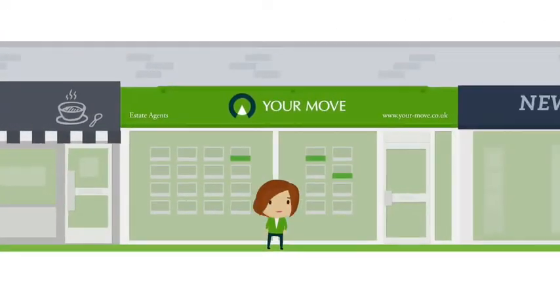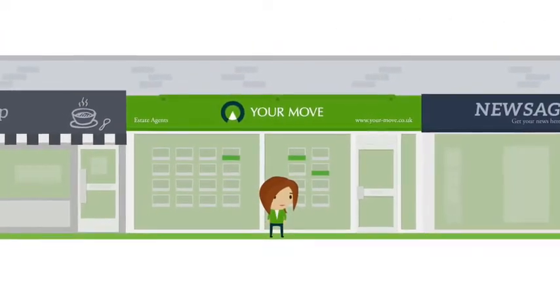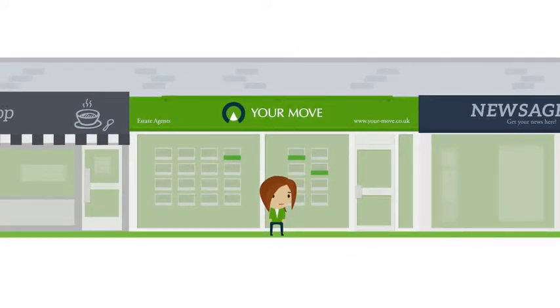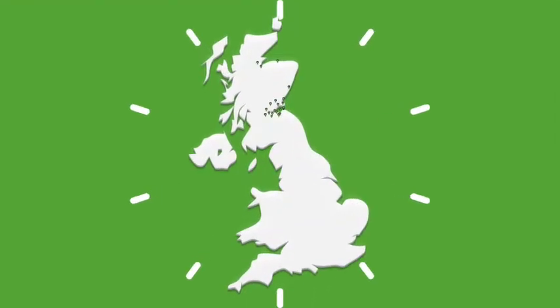So it helps that we're the UK's biggest single brand of estate agency, with a network of over 260 connected branches, with 30 in Scotland.